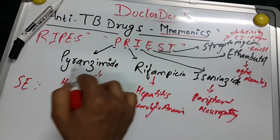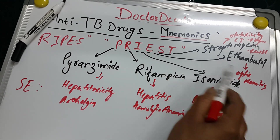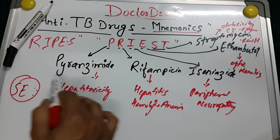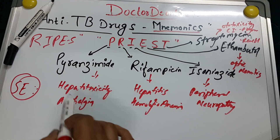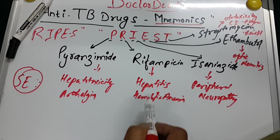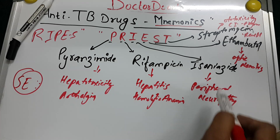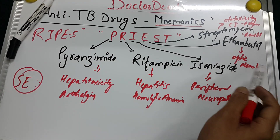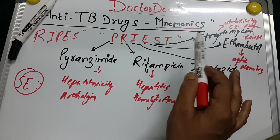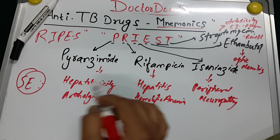To summarize the side effects: Pyrazinamide — hepatotoxicity and arthralgia; Rifampicin — hepatitis and hemolytic anemia; Isoniazid — peripheral neuropathy; Ethambutol — optic neuritis; Streptomycin — ototoxicity, contraindicated in pregnancy and renal failure. You must remember all these side effects.